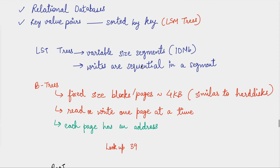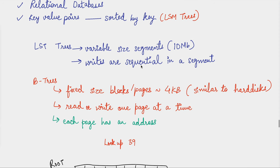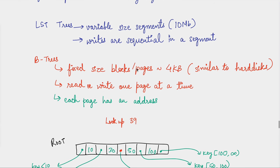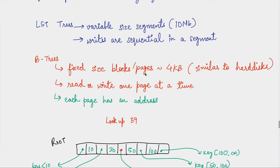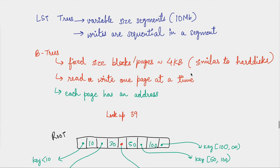Another good thing about LSM trees was that the writes were sequential. B-trees are different — in B-trees you're talking in terms of fixed-size blocks or pages, each having a size of close to four kilobytes. You have to make sure that you read or write one page at a time. Even if you have to change a few bytes in one page, the entire page needs to be overwritten.